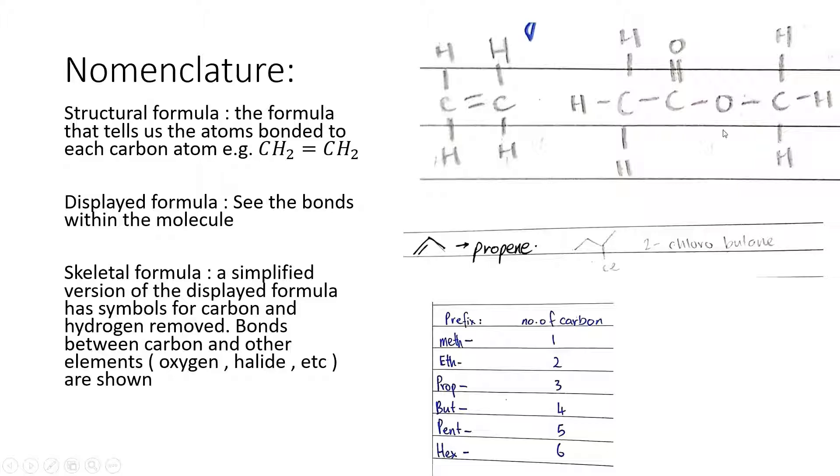Next up we have display formula which shows all the bonds within the molecule. So in this case we have ethene. So the double bond is shown and the single bonds with hydrogen is shown. And in this case the ester linkage is shown as such and so are the single bonds over here, over here, over here. So everything is shown.